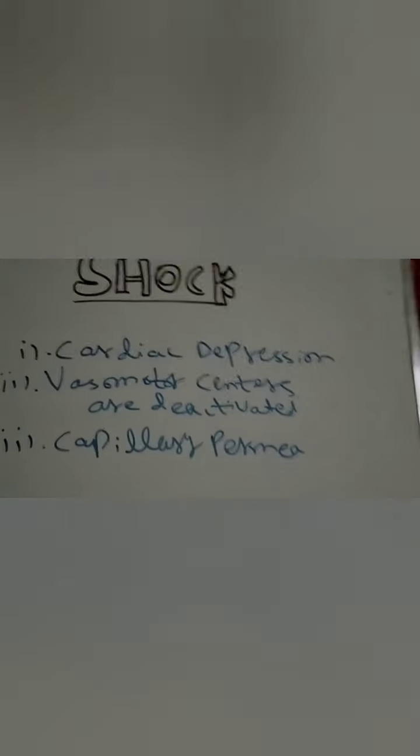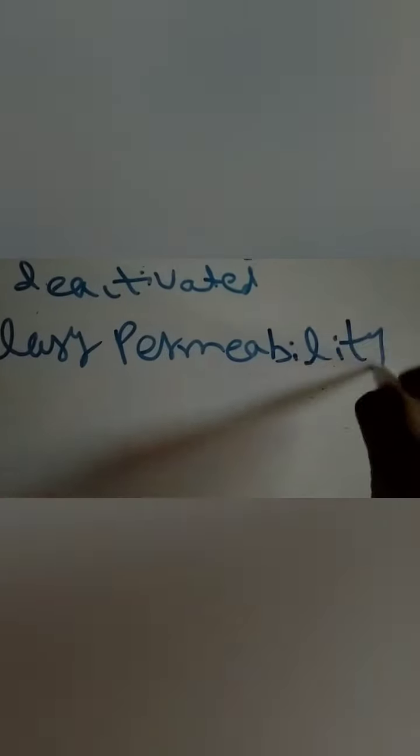Furthermore, in progressive shock, capillary permeability increases. This occurs because there is less blood volume in the blood vessels and the speed of blood flow is slow. That blood becomes permeable towards the walls of the capillaries and flows out of the blood vessels into the cavities. Capillary permeability increases because of low blood velocity.